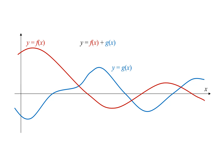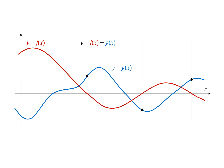First, let's look for values of x where f of x is zero. At these values of x, adding f of x to g of x means adding zero to g of x, so we just get g of x at each one of those values of x.